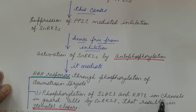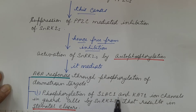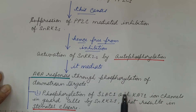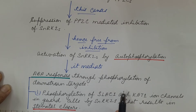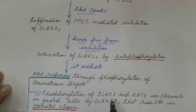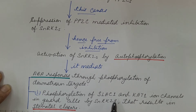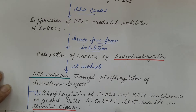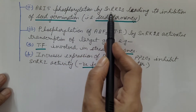This phosphorylated, activated SnRK2 mediates ABA responses through phosphorylation of downstream targets. First, phosphorylation of SLAC1 and KT1 ion channels in guard cells by SnRK2s results in stomatal closure. This phosphorylation causes movement of solutes from guard cells to the outside, increasing solute concentration outside relative to inside. As a result, water moves from the guard cell to outside, the guard cell becomes flaccid, and the stomata closes, preventing transpirational water loss during water deficiency.